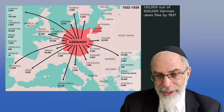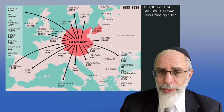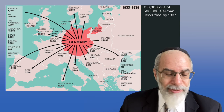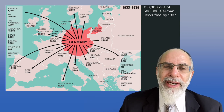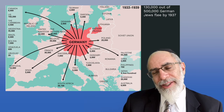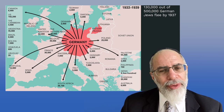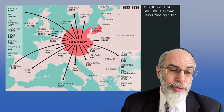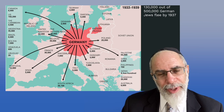Kristallnacht was a last warning to the Jews of Germany that they had better get out. The difficulty was that although many Jews were quite willing to leave and a large number did, very few countries would accept them as immigration quotas were imposed, leaving fewer and fewer Jews able to find safe haven elsewhere. We'll continue with the onset of World War II and the Holocaust in the next lecture.